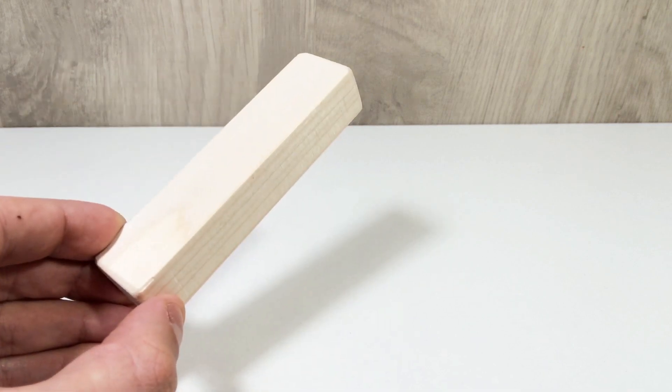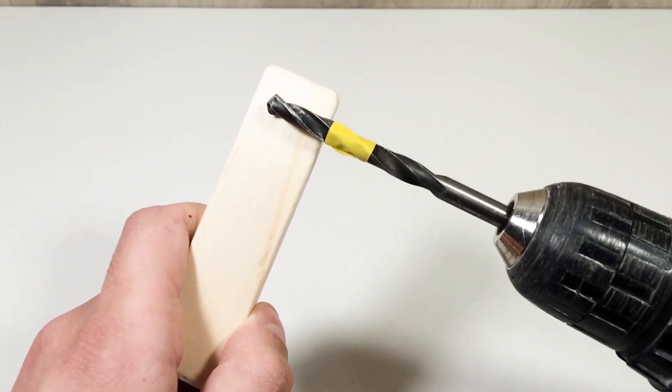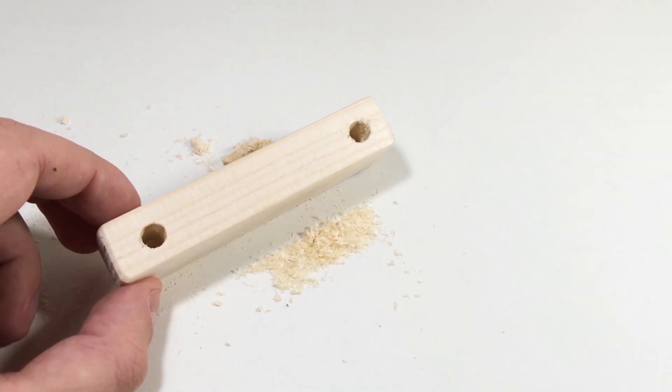First, grab a small wooden block. This will be the base of our build. Drill two evenly spaced holes into it. They don't need to be too deep, just enough to fit two regular pencils snugly.